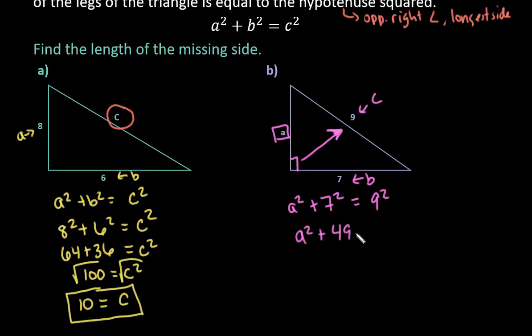I end up with A squared plus 49 is equal to 81. And when I subtract 49 from both sides, I end up with A squared equals 32.